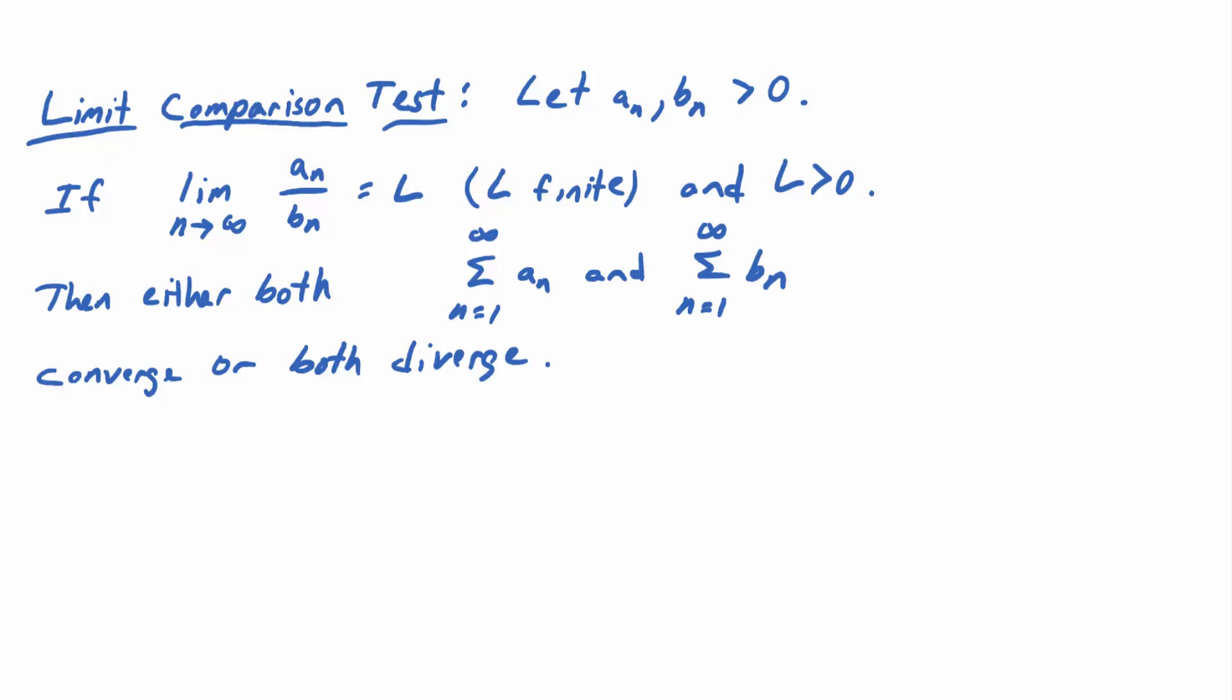If the limit, as n goes to infinity, of the ratio of a_n to b_n equals L. Now, L has to be bigger than 0 and finite. Then either both the series involving a_n and the series involving b_n, either they both converge or they both diverge.